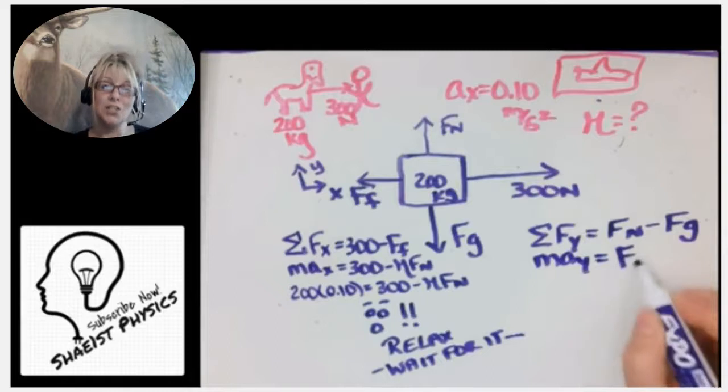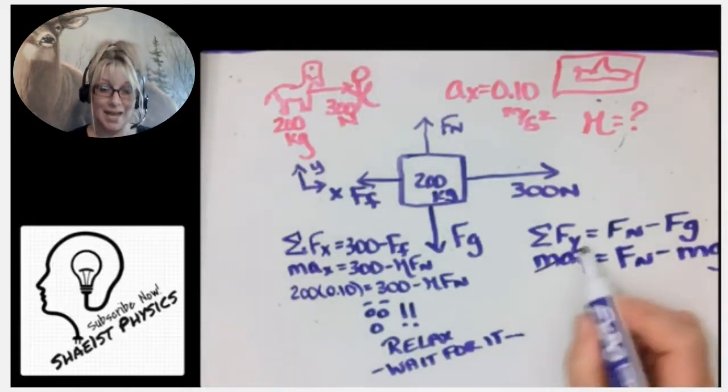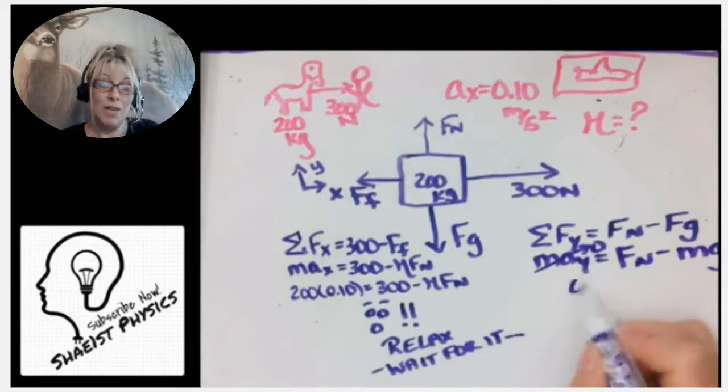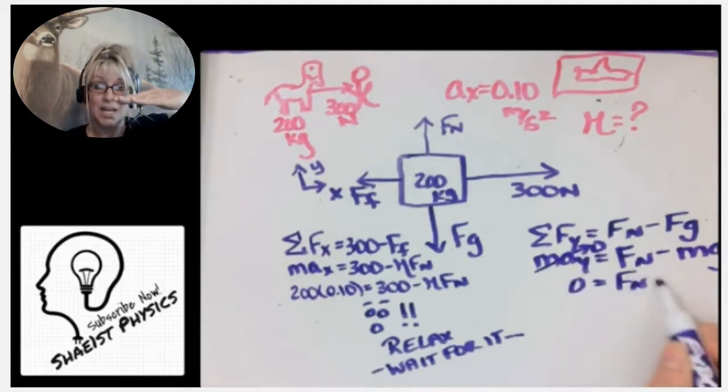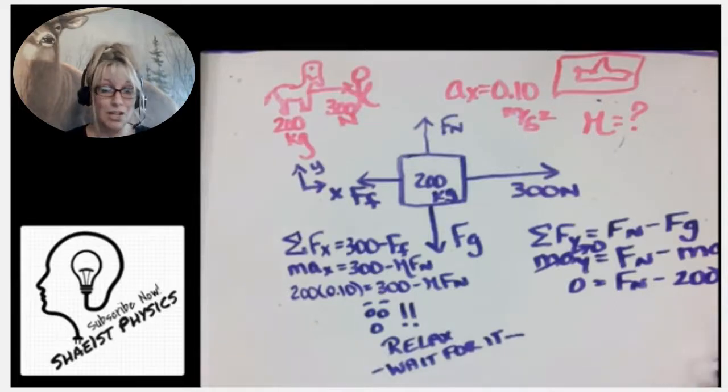Newton's second law told us that the sum of all forces in the y direction is the same thing as m times a in the y direction. Now we have no acceleration—the mule is at a constant velocity of zero up and down. He's not jittering up and down, so our acceleration in the y direction is 0.